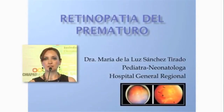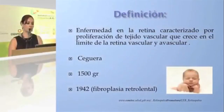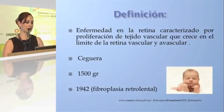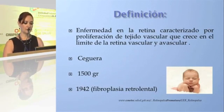Retinopathy of prematurity — vascular and avascular. By definition, it is a disease of the retina characterized by the proliferation of vascular tissue that grows at the border of the vascular and avascular retina. It is one of the leading causes of blindness in infants under 1,500 grams, and it was described for the first time in 1942 as retroalentary fibroplasia by Theodore Lassater.